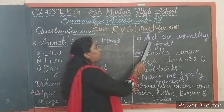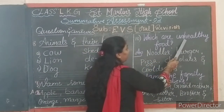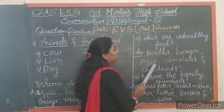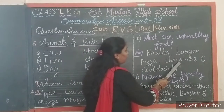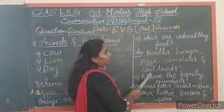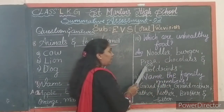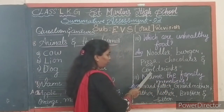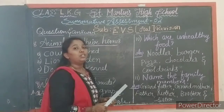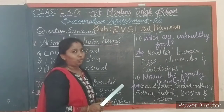Next question: which are unhealthy food? Answer — noodles, burger, pizza, chocolates and cool drinks. Say once again children — noodles, burger, pizza, chocolates and cool drinks. What are unhealthy foods? Noodles, burger, pizza, chocolates and cool drinks.